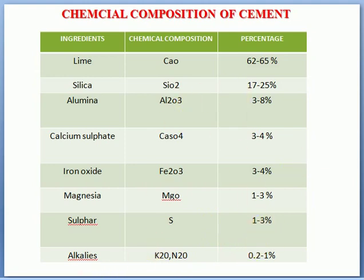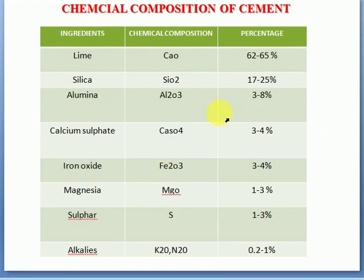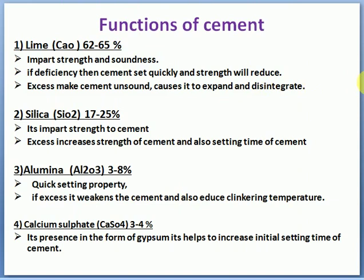Friends, these are all the chemical compositions you need to remember. Exams can ask the percentage of any compound. Magnesia is 1 to 3%, sulfur is 1 to 3%, and alkalis (K2O) is 0.2 to 1%. All these percentages are important — cross-questioning can come from here. Next, we will study the functions of each compound in depth.